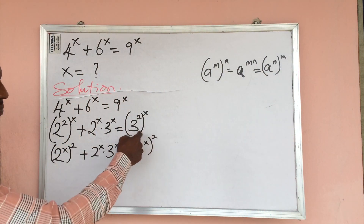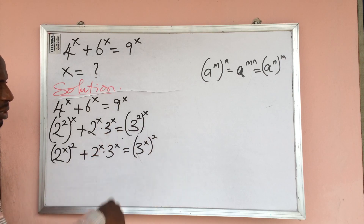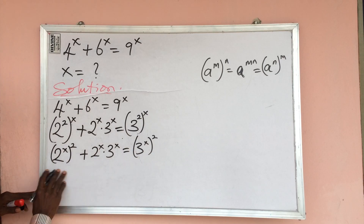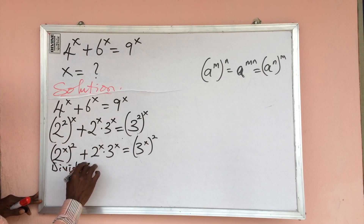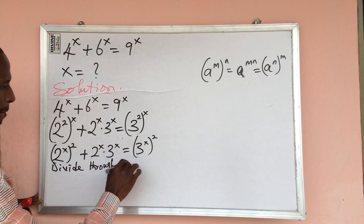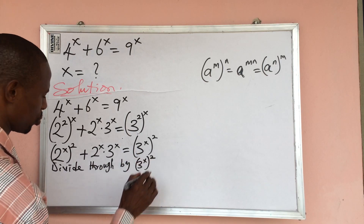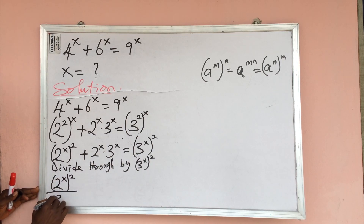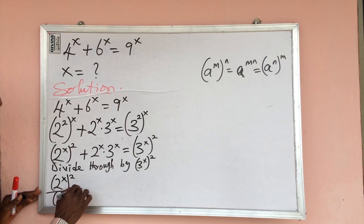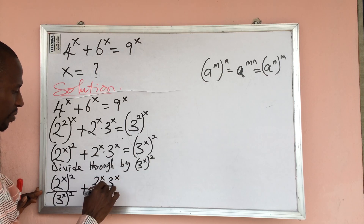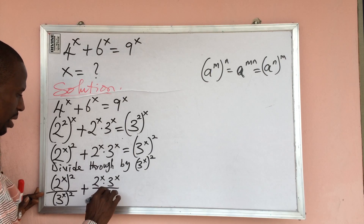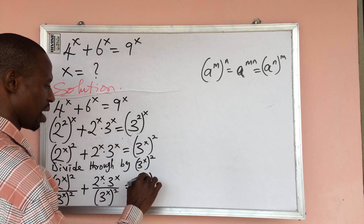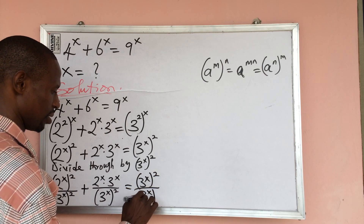Looking carefully at our expression, we want to make the right-hand side unity. So we divide through by 3 to the power of x, all to the power of 2. This gives us: 2 to the power of x, all to the power of 2, over 3 to the power of x, all to the power of 2, plus 2 to the power of x times 3 to the power of x, all over 3 to the power of x, all to the power of 2, equals 1.